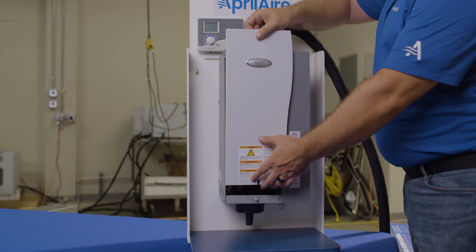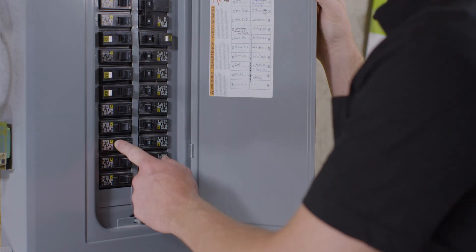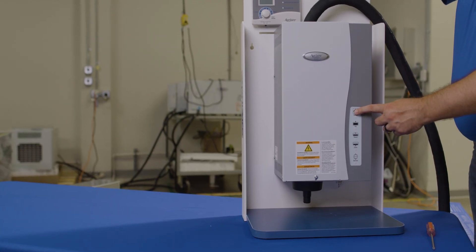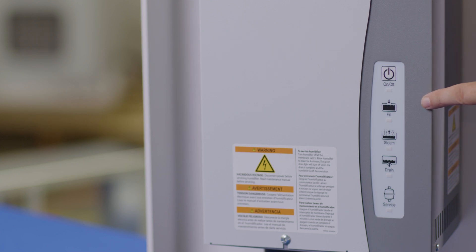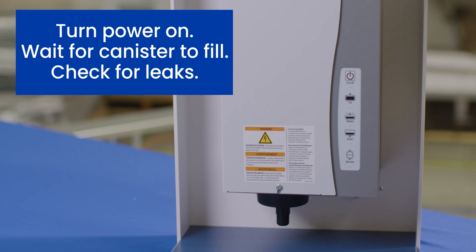Put the cover back on. Turn the power back on at the breaker. Turn the humidifier on and let it fill. After it's done filling, make sure there is no water coming out of the bottom of the unit and that the drain line is not blocked.